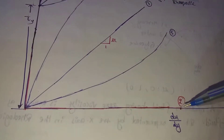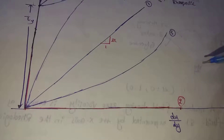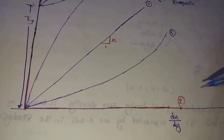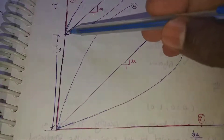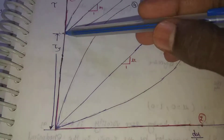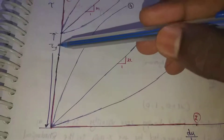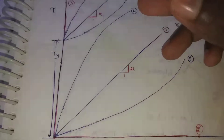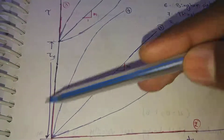On the diagram, the x-axis shows du/dy, which is the velocity gradient. The y-axis shows tau, which is the yield shear stress. This is the shear stress axis.